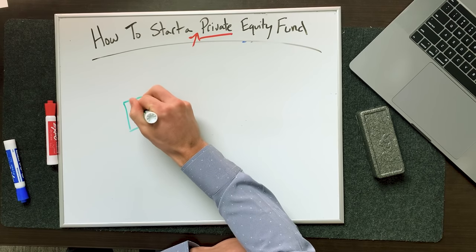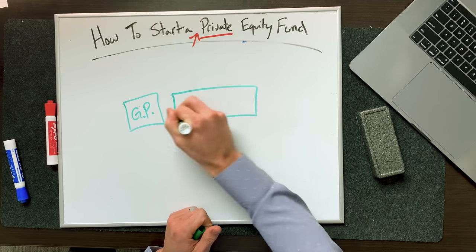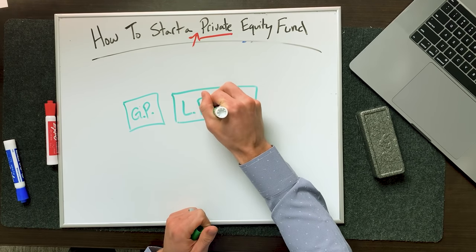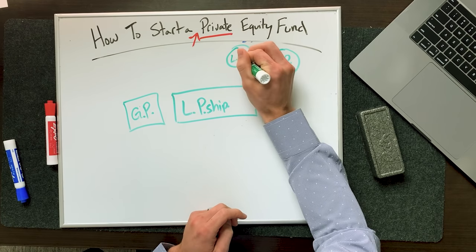All right, back to the whiteboard of truth and justice, as we call it. We've got our general partner — I'm going to explain to you how 99% of all funds are structured, there are other ways, but this is the most common way. First thing you have is your general partner. This is an entity. And then you have a limited partnership — also an entity. What happens is you have investors or limited partners who will put money, their capital, and commit to the limited partnership. This is true for hedge funds or venture capital, but today we're talking specifically private equity.